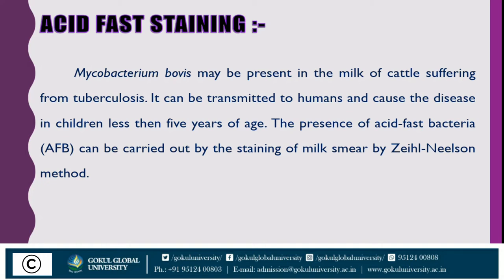Examples of acid fast organisms are Mycobacterium bovis, which is present especially in cattle and animals, and Mycobacterium tuberculosis, which is present in humans. They are acid fast group of organisms. Mycobacterium bovis is present in cattle suffering from tuberculosis and has the capacity to transmit from those animals to humans.